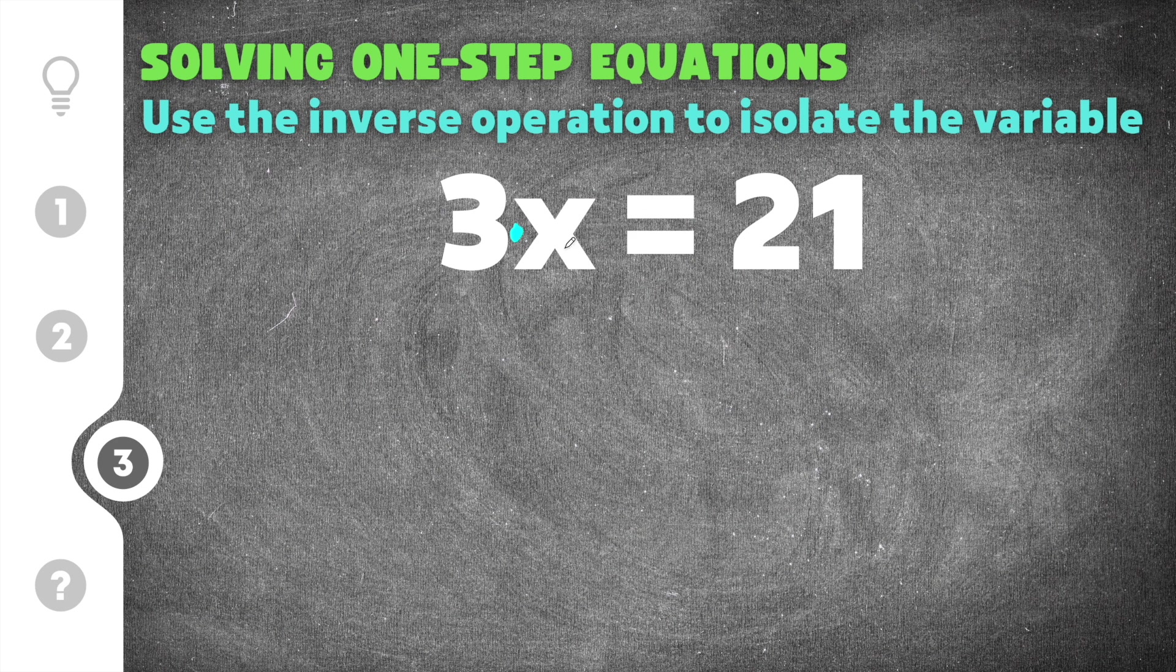Now the opposite of 3 times x is to divide by 3. So this is multiplication. The opposite of multiplication is division. In order to show that I'm going to just draw this fraction bar here which means divide and put a 3 underneath.